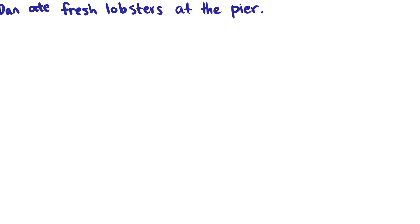Second sentence: 'Dan ate fresh lobsters at the pier.' This is a full sentence, so we're going to start with a TP. 'Fresh lobsters' is the thing he's eating, so that is the complement. 'At the pier' tells us where he ate, so that is an adjunct. 'Fresh lobsters' is the direct object — it tells us what he ate — so it is the complement. Objects are always complements of verbs.